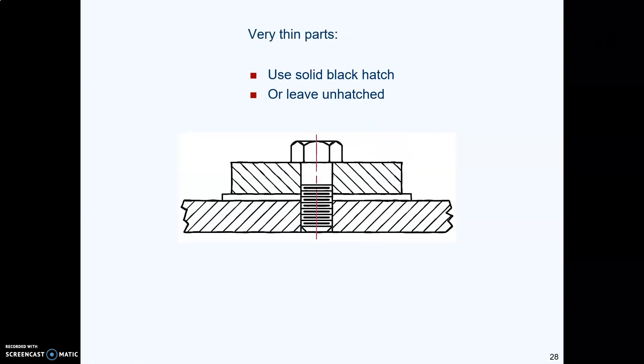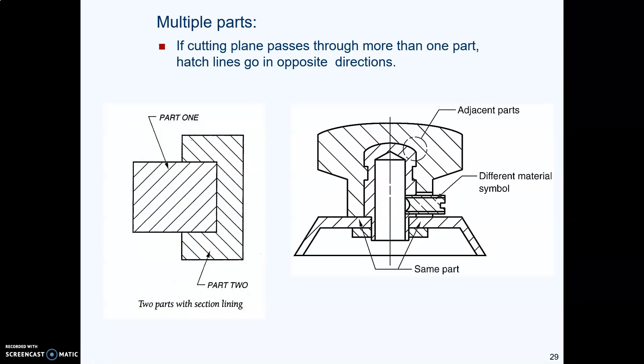If you have a very thin part like this, whatever this is, shim or something, you don't have to hatch the very thin part. You can leave it blank or you can use a solid black fill if you want.